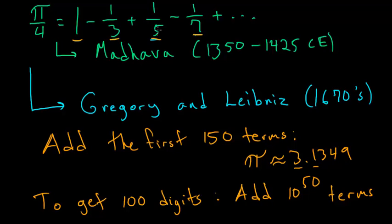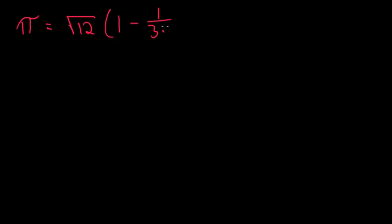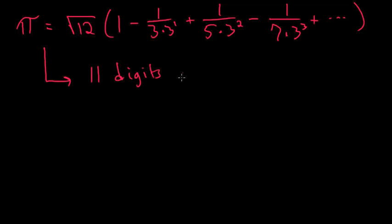Madhava found a slight modification of this series, which he used to actually compute digits of pi. The series that he was able to find is that pi is equal to the square root of 12 multiplied by the infinite sum of 1 minus 1 over 3 times 3 to the first plus 1 over 5 times 3 squared minus 1 over 7 times 3 cubed and so on. He used this series to find 11 digits of pi around the year 1400 CE.